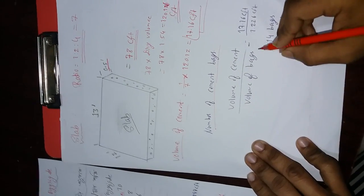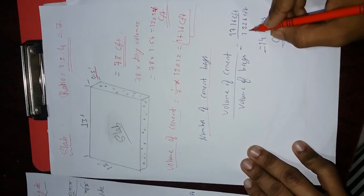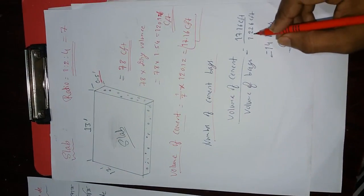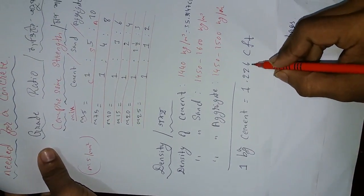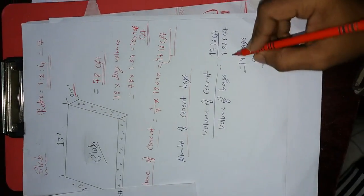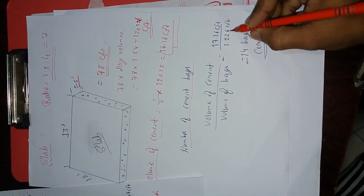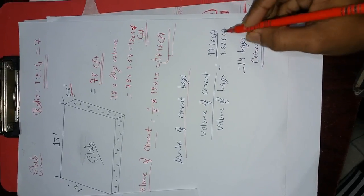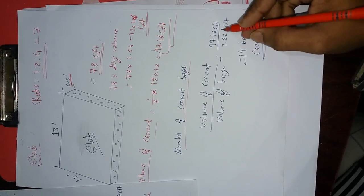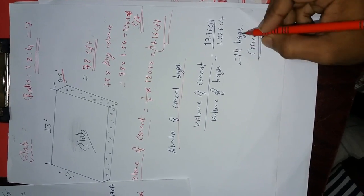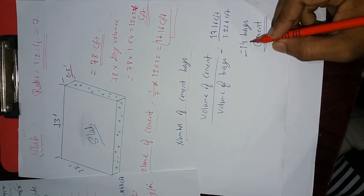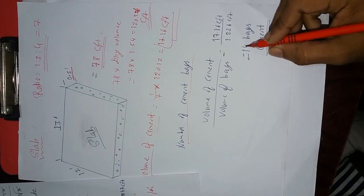We have a volume of bags. 1 bag of cement is equal to 1.226 cft. We have 14 bags of cement.